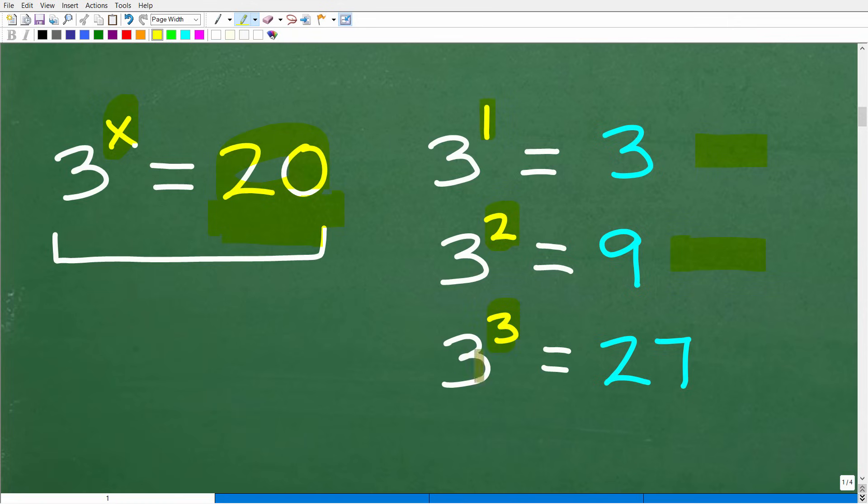So we're going to have to increase our power here. So we'll bump it up to two. Now three to the second power is three times three. That's nine. Well, that's better than three. It's getting closer to 20, but we need to keep going. So how about three to the third power? Well, that's three times three times three. That's 27. Well, now we went too much.